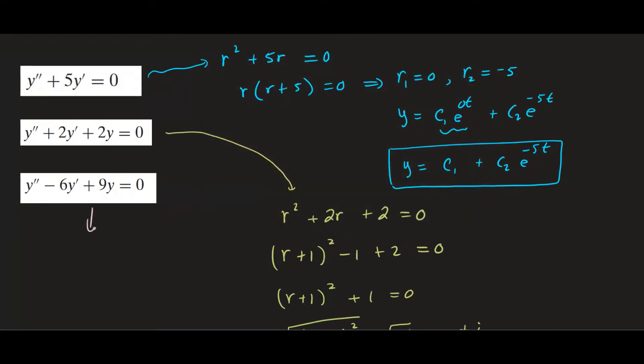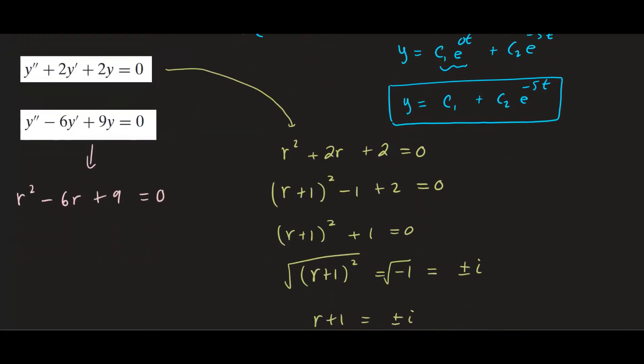So this can be written as r squared minus 6r plus 9 equals zero. And then we try to factor or use the quadratic formula. I'm going to factor this. So this is r minus 3, r minus 3 which can be written as r minus 3 squared equals zero.